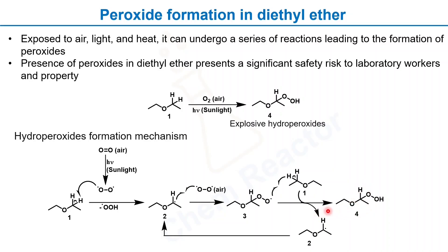Along with this, it gives a diethyl ether radical. This is basically a chain reaction. Once initiated, it accumulates more and more diethyl ether hydroperoxide, and that's how it poses a danger to the laboratory or property.